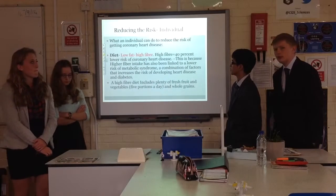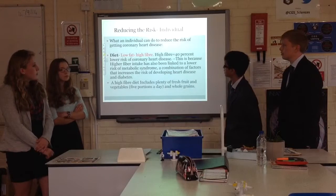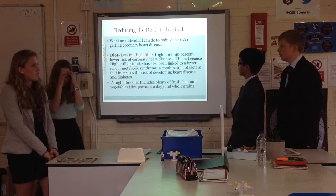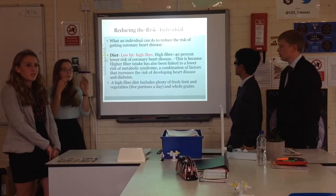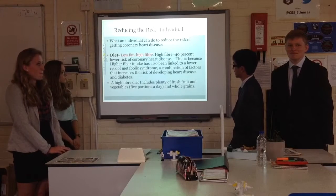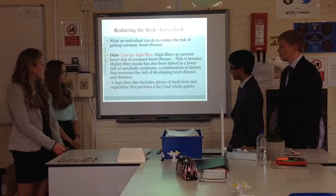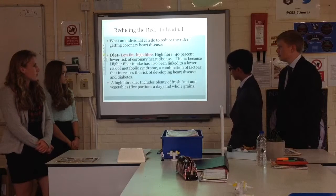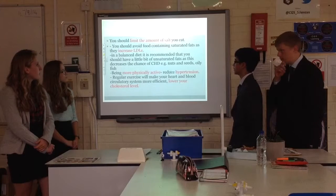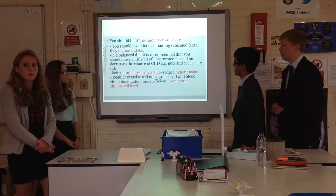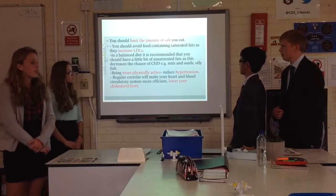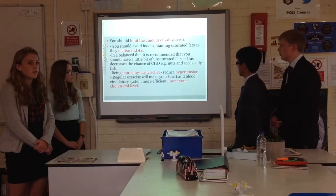Reducing the risk: individuals should maintain their diet with a low-fat, high-fibre diet. High-fibre intake, around 40%, lowers the risk of coronary heart disease, because it has been linked to a lower risk of metabolic syndrome — a combination of factors that increases the risk of developing heart disease and diabetes. A high-fibre diet includes plenty of fresh fruit and vegetables, around five portions a day, and whole grains. You should limit the amount of salt you eat, and avoid foods containing saturated fats, as they increase low-density lipoproteins (LDLs). A balanced diet should include a little unsaturated fat, such as from nuts, seeds, and oily fish, as this decreases the chance of CHD.